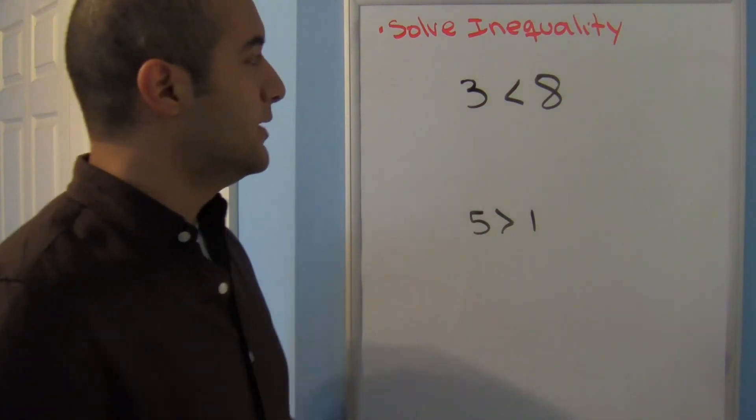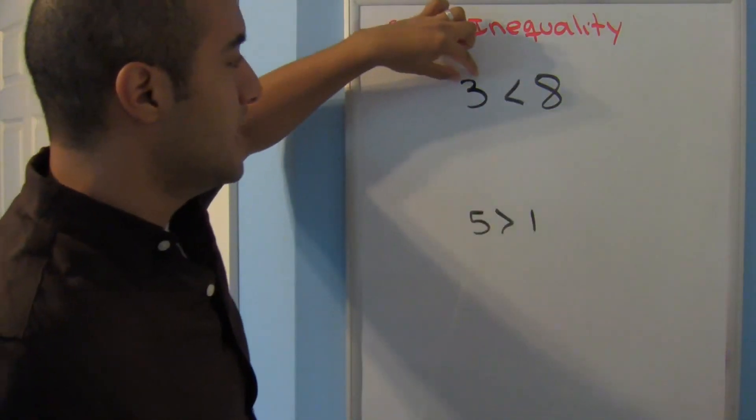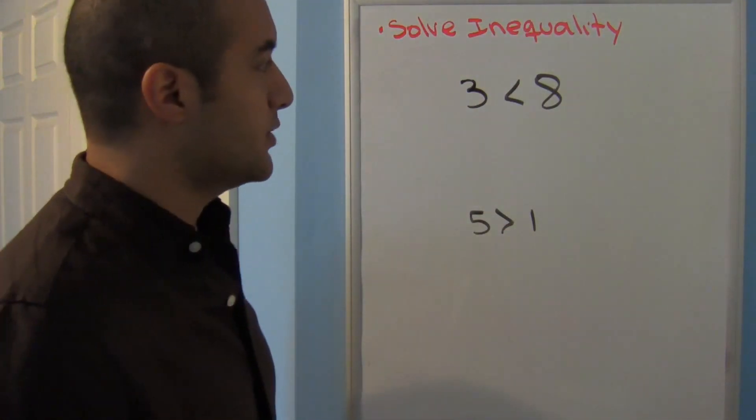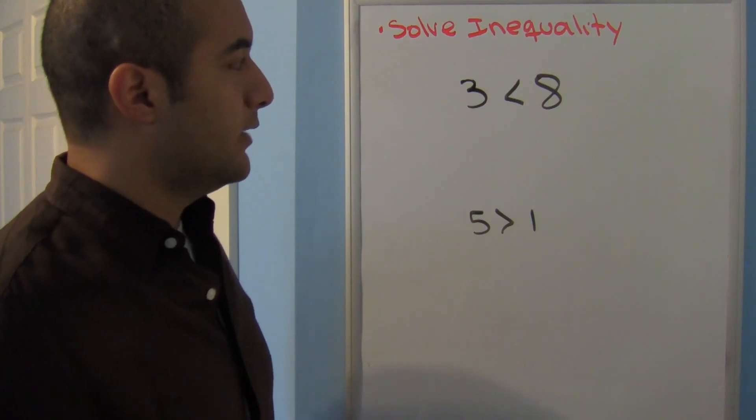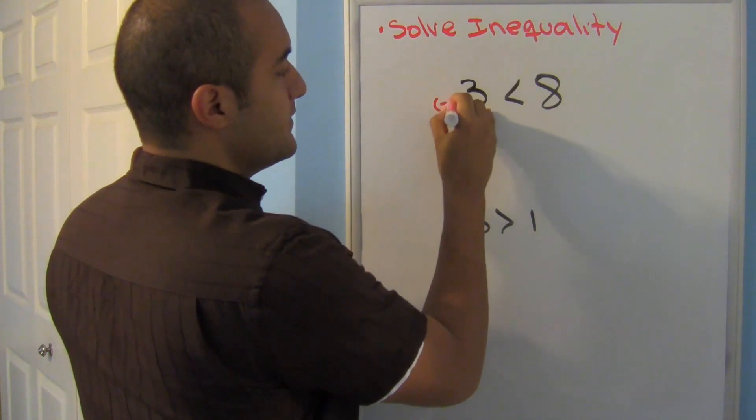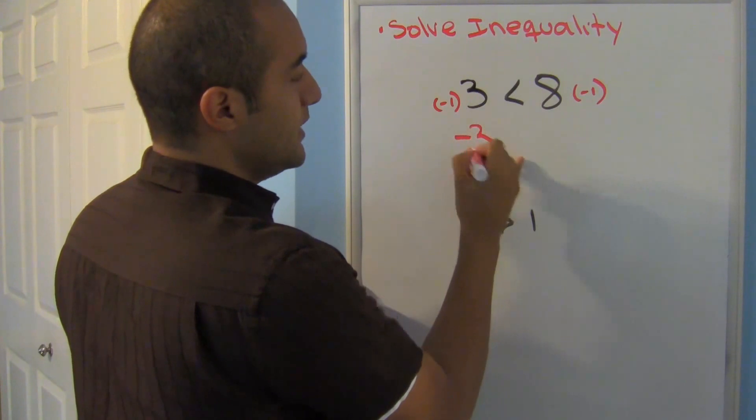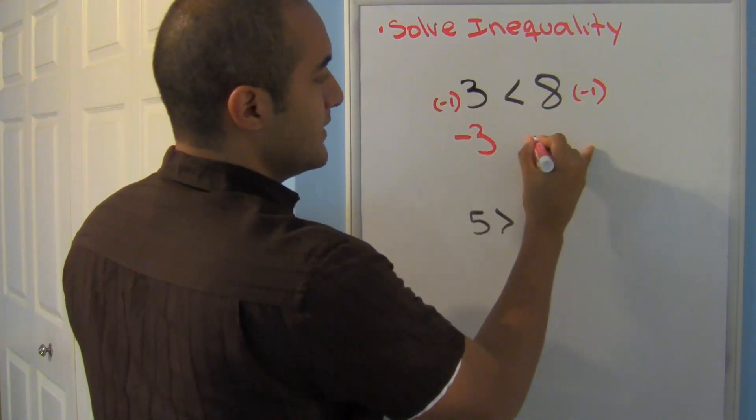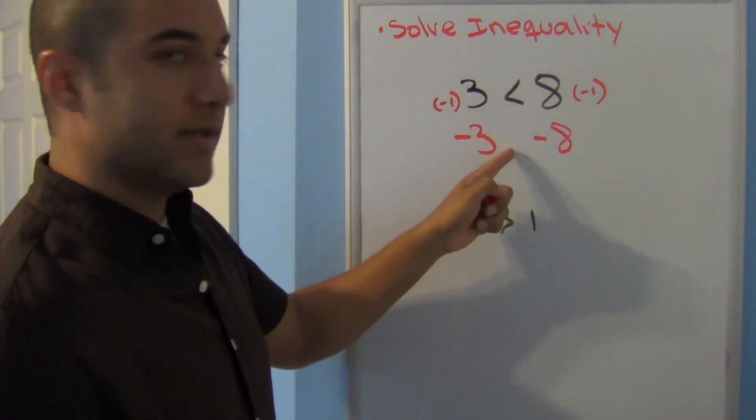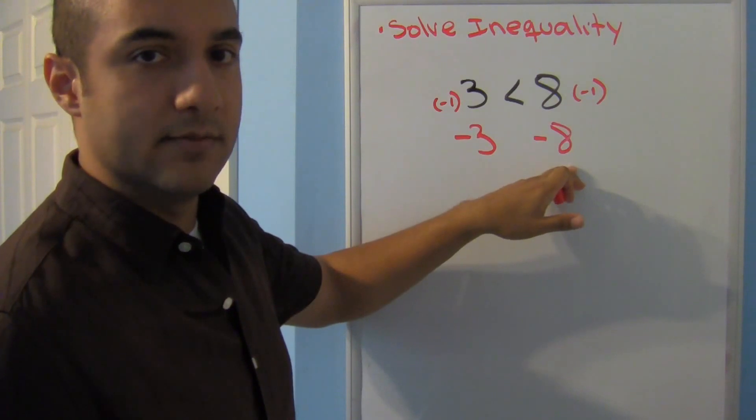Now why does that happen? Let's look at the two problems I have so far. This says 3 is less than 8, and 5 is greater than 1. Both of them are true. Now if I multiplied this by a negative 1, let's see what happens. This says negative 3 and this says negative 8. If I just brought that symbol down, it would say that negative 3 is less than negative 8, but we know that's not true. Therefore my sign must face the other way.